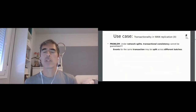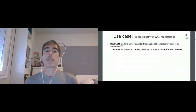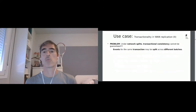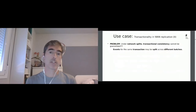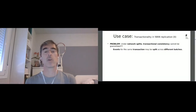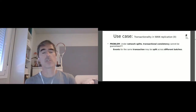But looking at this behavior, we found a problem. Under network splits, transactional consistency cannot be guaranteed. The reason is that events for the same transaction may be split across different batches. So if we send some events for one transaction in one batch and then have a network split, on the remote side not all the events for that transaction will be applied. If the split lasts for a long time, that could cause some trouble to the clients connected to the remote side.